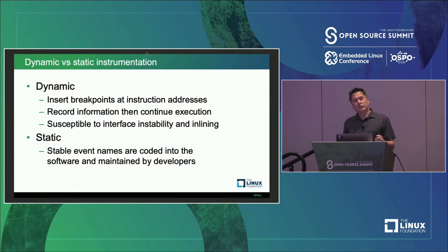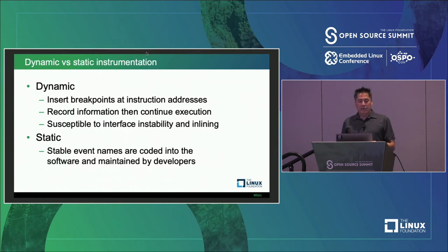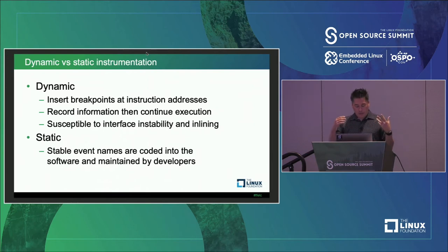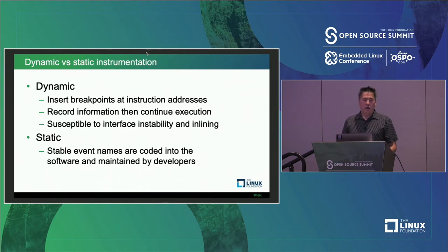The other kind of instrumentation is static: stable event names hard-coded into the source code that maintainers have to enforce. It's a contract — you are not going to break this API, and the names of these events will stay forever.